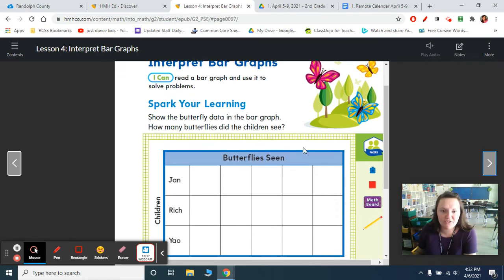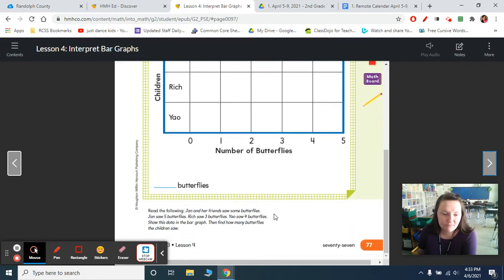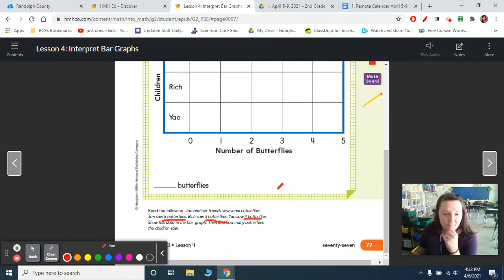Bar graphs are so much fun, you guys! I love bar graphs. Okay, so now it says, show the butterfly data in the bar graph. How many butterflies do children see? The problem says Jan and her friends saw some butterflies. Jan saw five. Rich saw three. Yao saw four. Show this data in the bar graph, then find how many butterflies children saw. So now that means we've got to total it up.